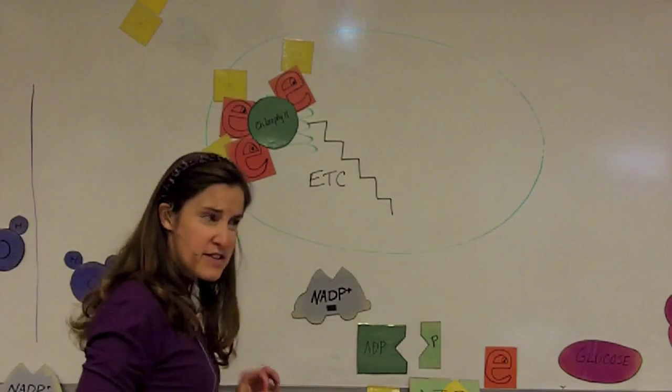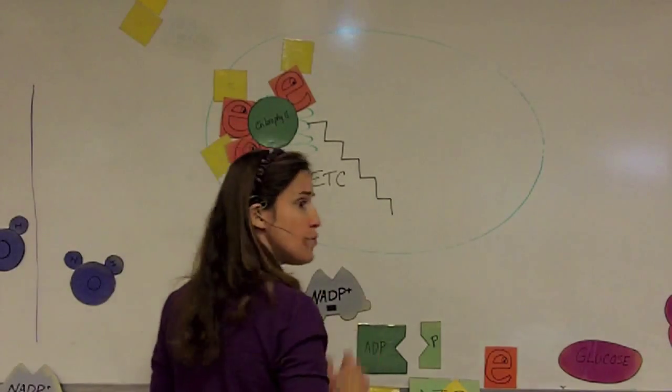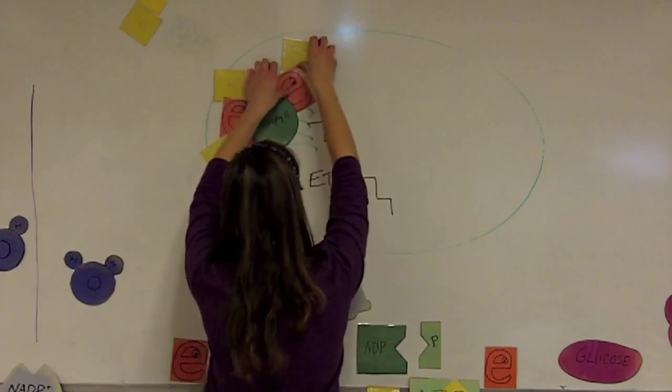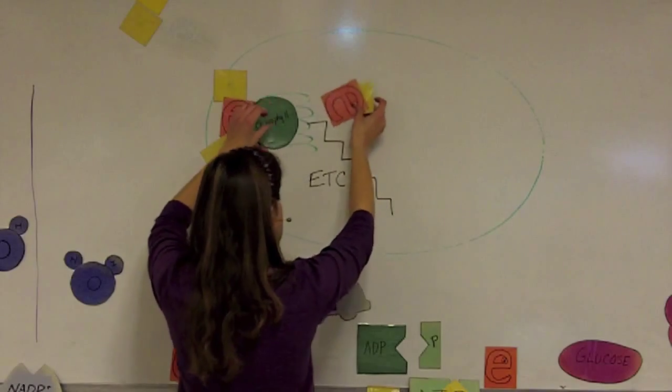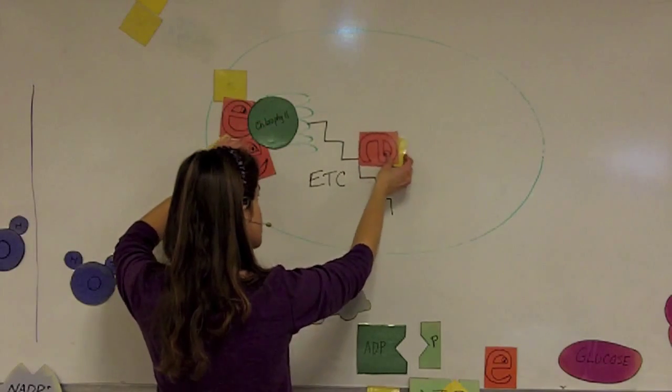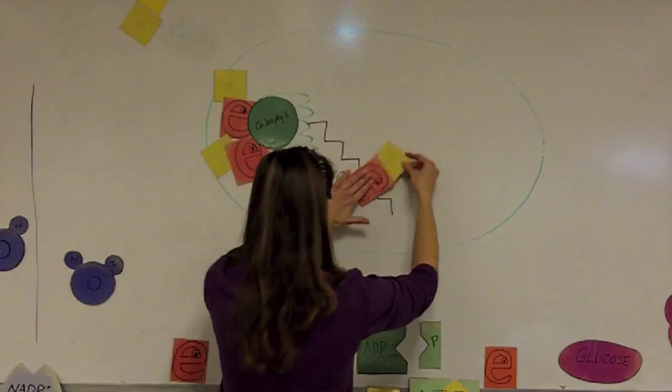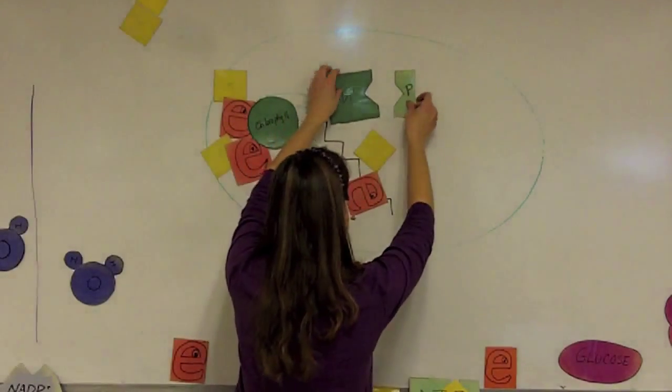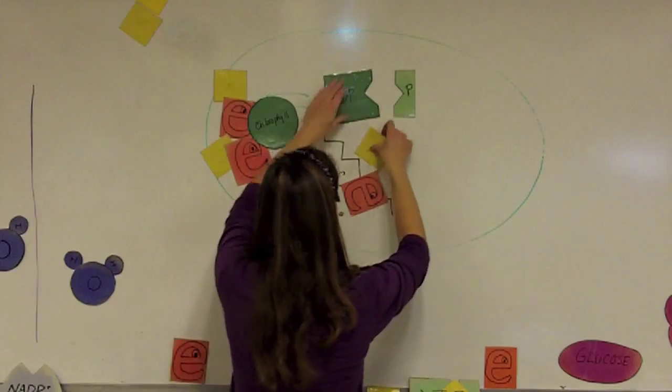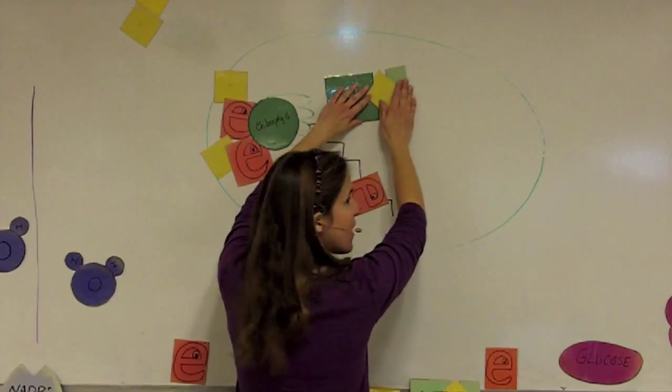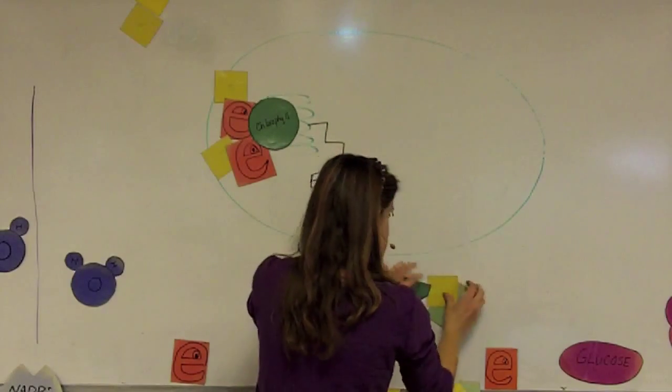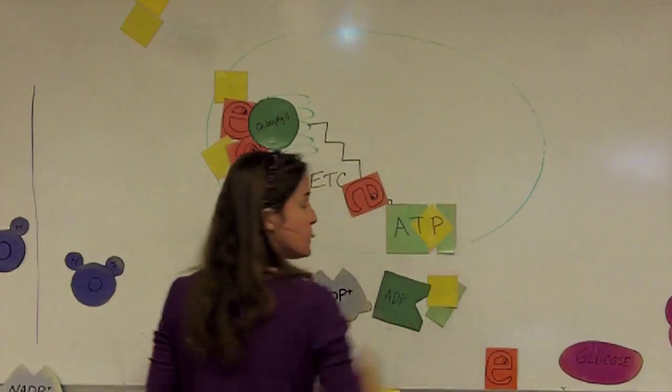You don't need to know the details of how the ETC works. But what happens is that the electrons are moved through these membranes, through the electron transport chain, and the energy from them is used to charge ADP and phosphate to put that third phosphate molecule on and to convert it into a molecule of ATP.